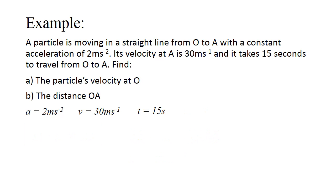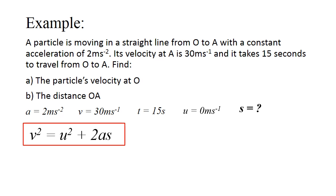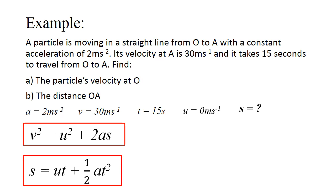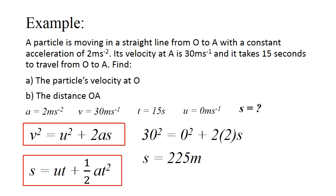Now let us move to Part B: the distance OA, which is the displacement travelled by the particle. Again, list out everything: a equals to 2, v equals to 30, t equals to 15, and u, which we found from Part A, is 0. Now we need to find the displacement S. We can use two formulae — v squared equals to u squared plus 2as, or s equals to ut plus half at squared. I'm going to use v squared equals to u squared plus 2as. Substituting the values: 30 squared equals to 0 squared plus 2 times 2 times S. With simple calculation, you get S equals to 225 metres.